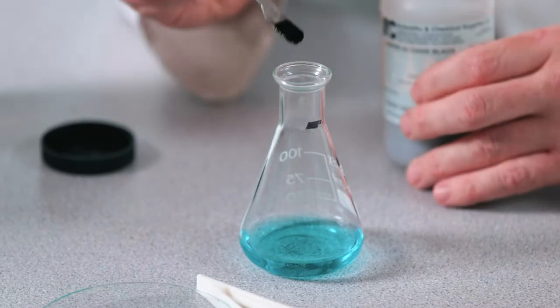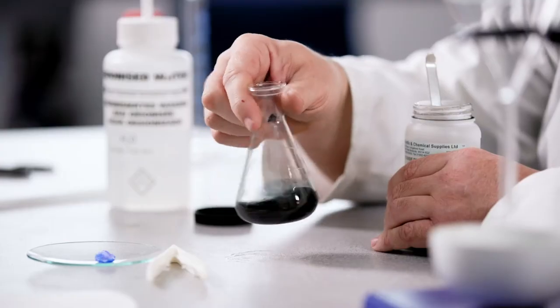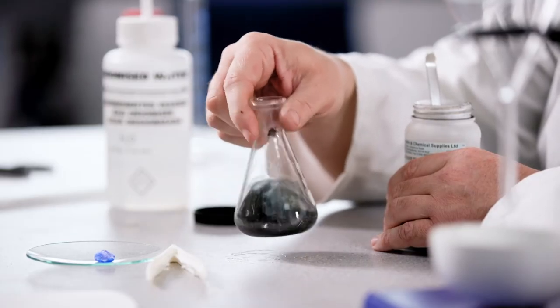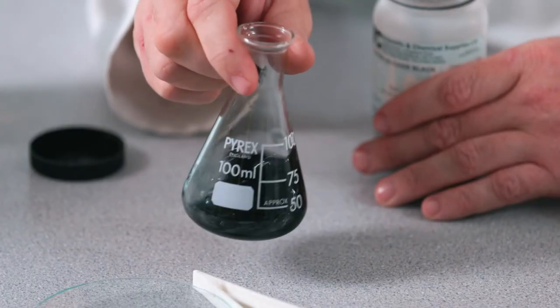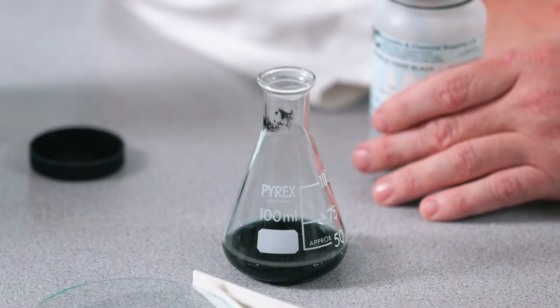Keep adding half spatula fulls of copper oxide to the reaction mixture with swirling until unreacted copper oxide remains in the conical flask. This will indicate that the copper oxide is now in excess, and all the sulphuric acid has reacted.